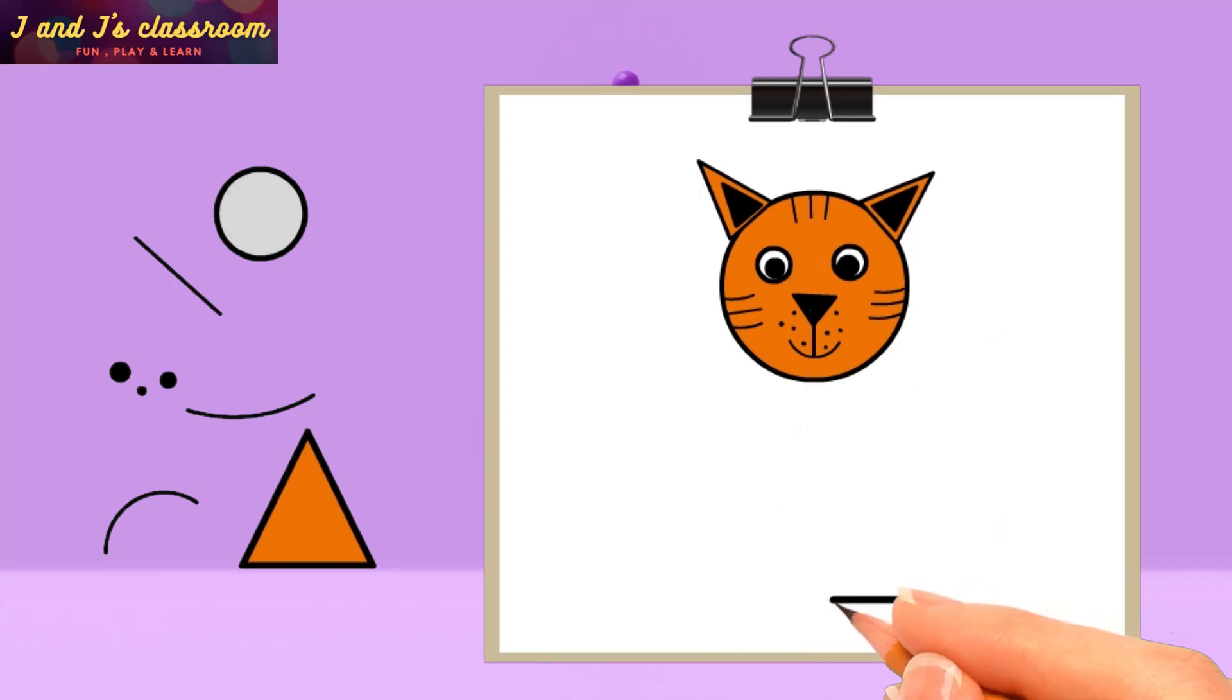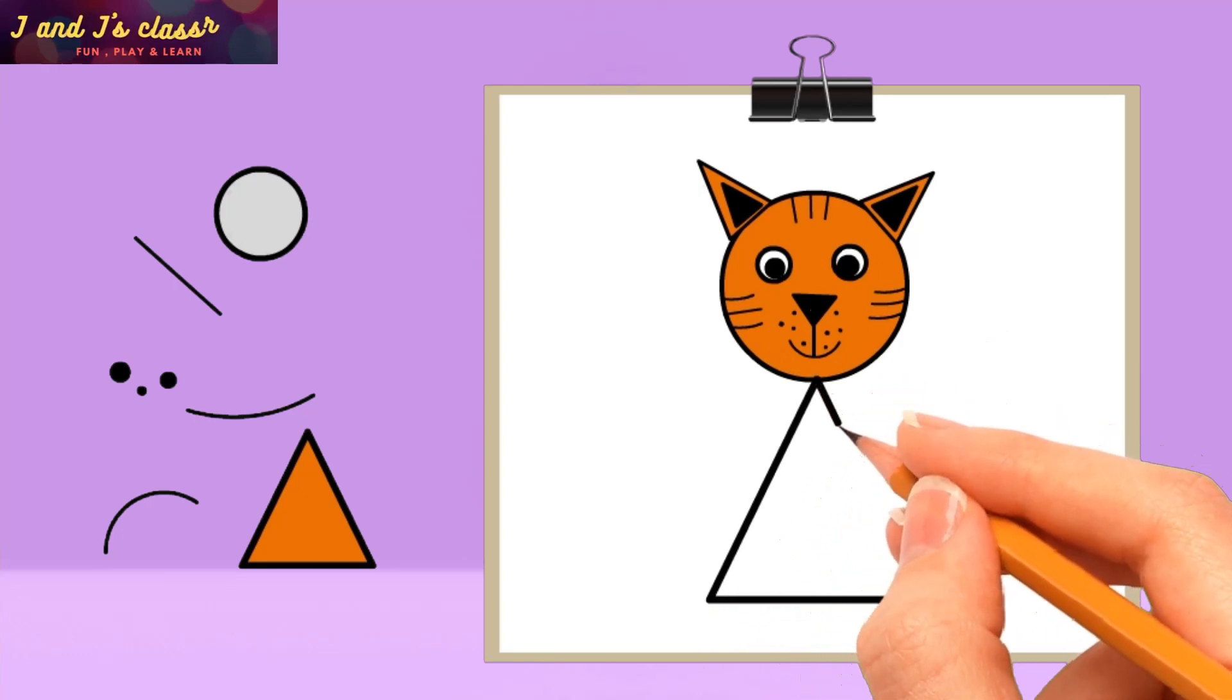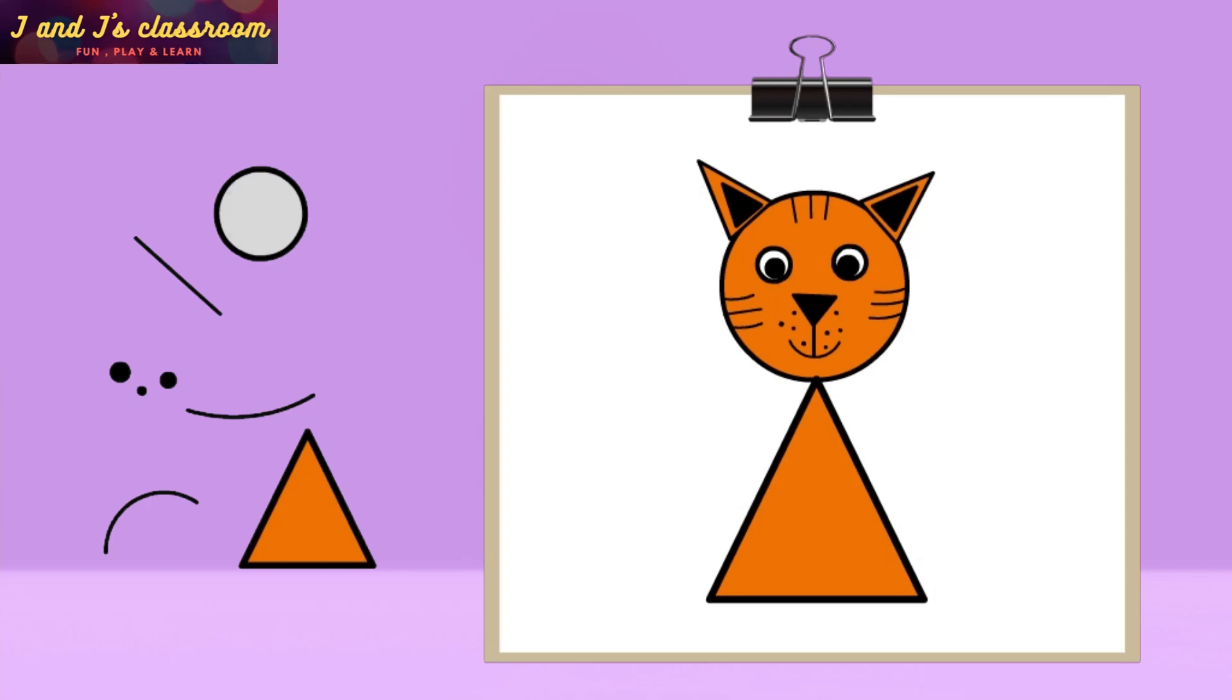Next, draw a big triangle for the cat's body and draw lines on it. Next, draw two small triangles for its paws. At last, draw one triangle for its tail. Well, now you can color your cat. Now our cat is ready.